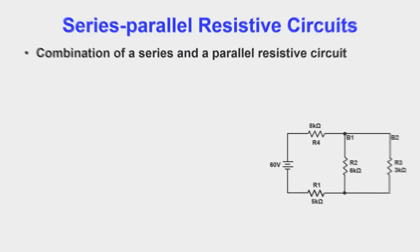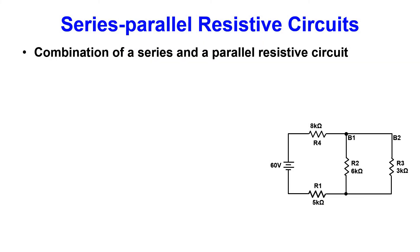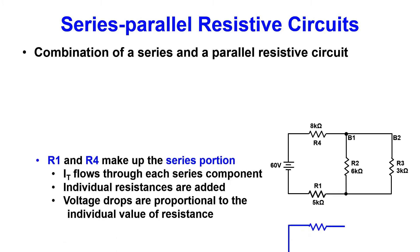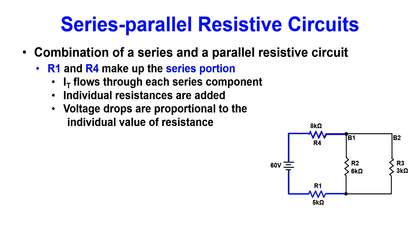A series parallel circuit is a combination of a series and a parallel circuit. R1 and R4 make up the series portion shown here in blue. IT flows through each series component. The voltage drops are proportional to the individual resistance value.